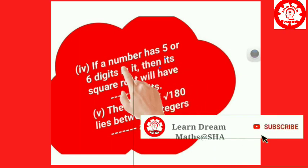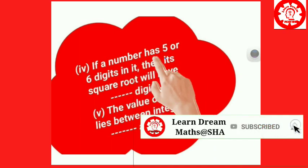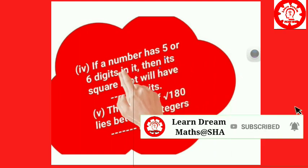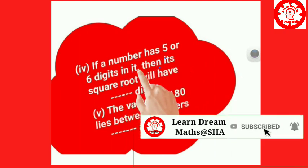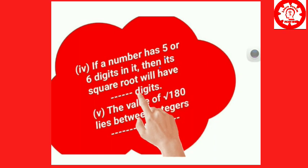So, if a number has 5 or 6 digits, how do we find the number of digits in its square root?